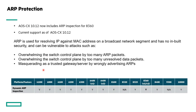Moving on to ARP protection — we've added support with 10.12 for the 8360. ARP by itself is not secure, so you need mechanisms to secure against common cases: overwhelming the switch control plane with too many nefarious ARP packets, too many unresolved data packets that don't correspond to a specific IP address, and masquerading as a trusted gateway by wrongly advertising ARPs. You can see the feature support across the product lines.